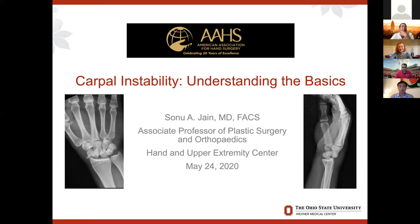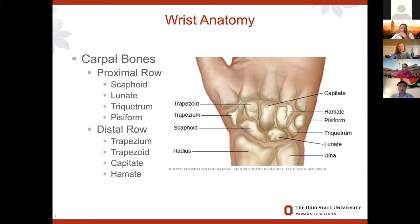I have no disclosures. To understand carpal kinematics and carpal instability, you really need to understand the anatomy. The carpal bones of the wrist: you need to know the proximal row — scaphoid, lunate, going from radial to ulnar, triquetrum, pisiform — and then the distal row: trapezium, trapezoid, capitate, and hamate. That's the foundation.